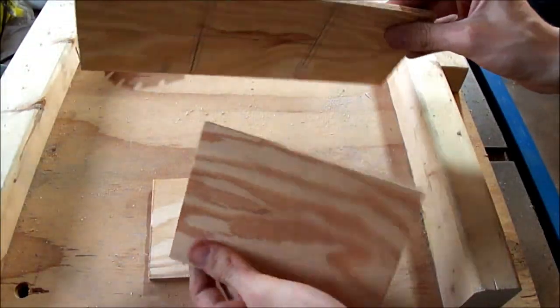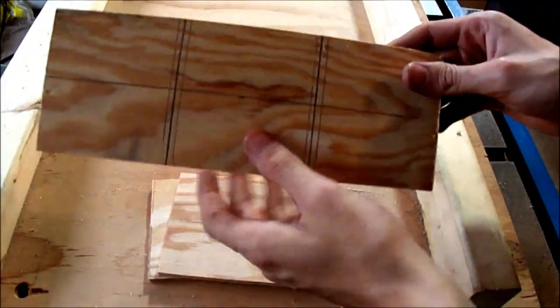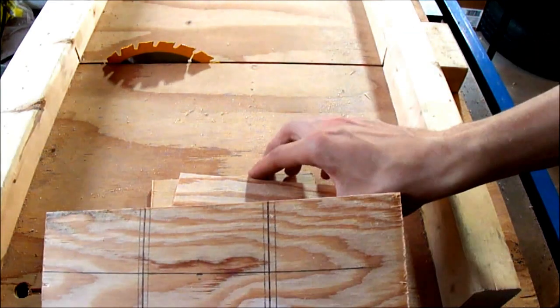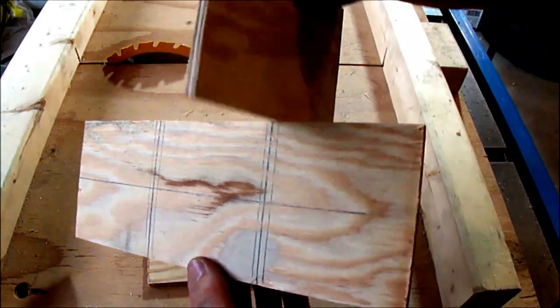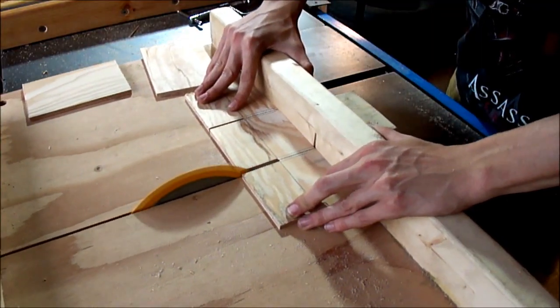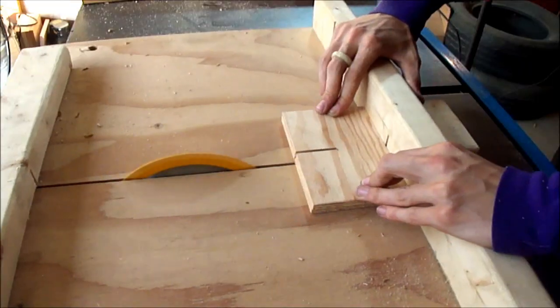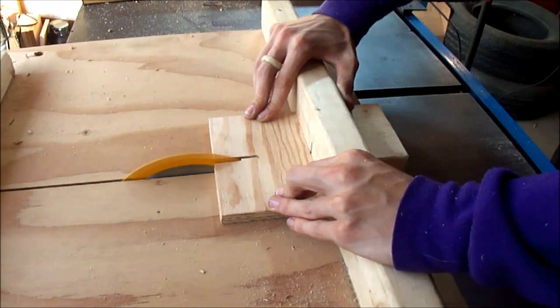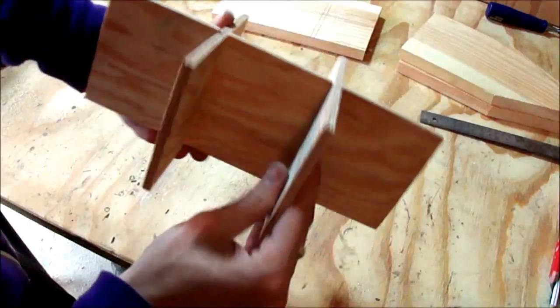I've cut out these dividers out of 1/4 inch plywood and I'll be cutting grooves halfway into them, into both opposite sides so they'll be able to slide into each other and make a little grid system. Nice snug fit.